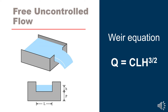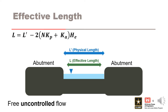Spillway discharge under free uncontrolled flow conditions is typically calculated using the basic weir equation. In this equation, the discharge depends on a discharge coefficient C, which can be found in various tables and publications, the length of the spillway crest L, and the head H acting above the spillway crest. When calculating spillway discharge using the basic weir equation, it is very important to always use the effective length of the spillway crest and not the actual physical length. The effective length will always be less than the physical length because of the flow contractions that occur near the spillway abutments and piers.